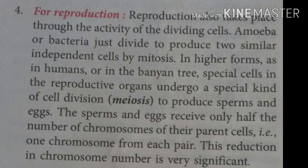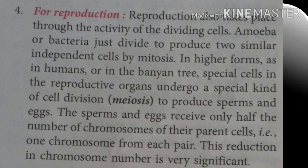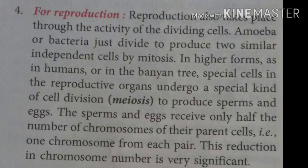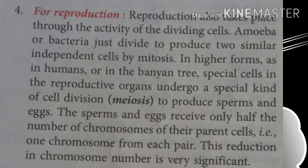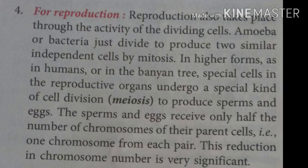The fourth need is for reproduction. Reproduction also takes place through the activity of dividing cells. Amoeba and bacteria just divide to produce two similar independent cells by mitosis. In higher forms, such as humans or the banyan tree, special cells in the reproductive organs undergo a special kind of cell division — meiosis — to produce sperm and egg. The sperm and egg receive only half the number of chromosomes from their parents, that is one chromosome from each pair. This reduction in chromosome number is very significant.